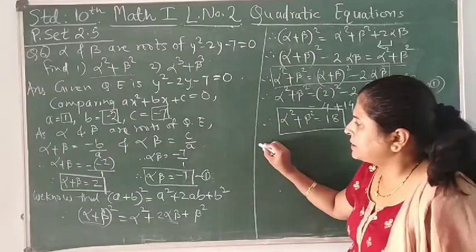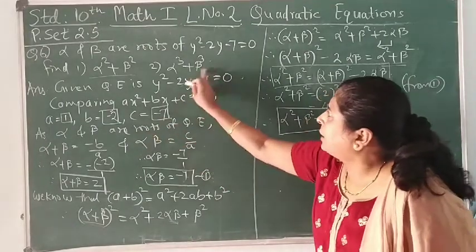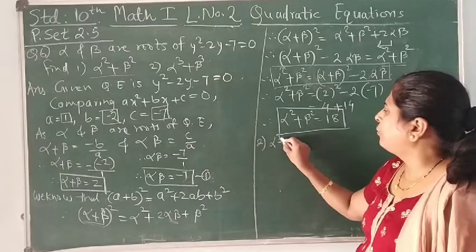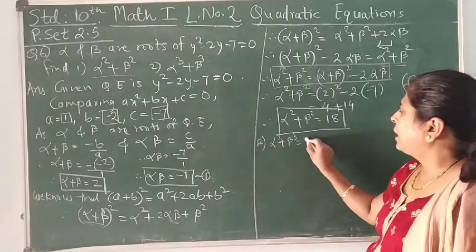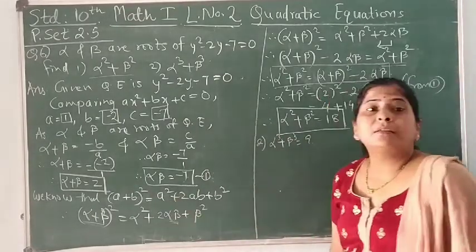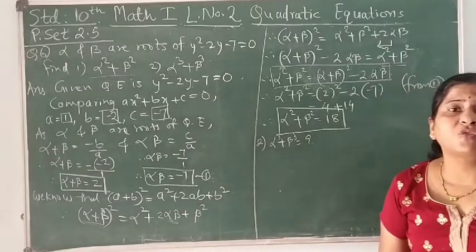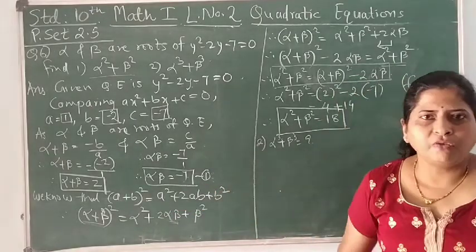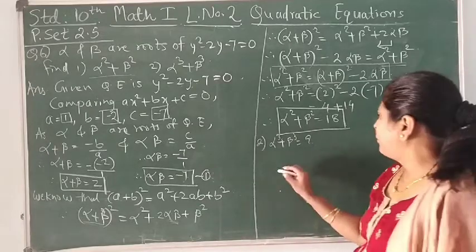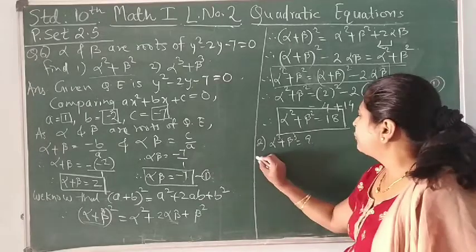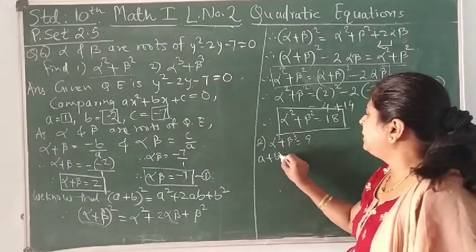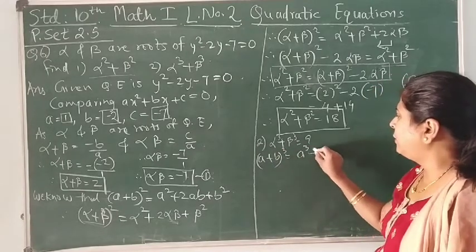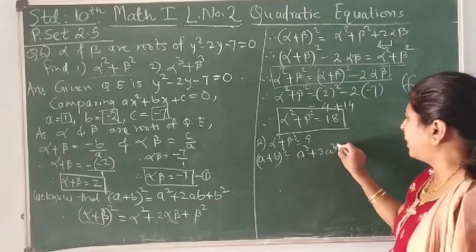The second part is to find α³ + β³. Just as we used the square of a binomial, let's now use the cube of a binomial. We know that (a + b)³ = a³ + 3a²b + 3ab² + b³.